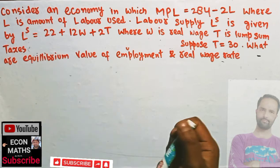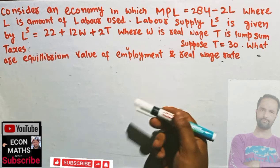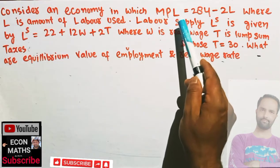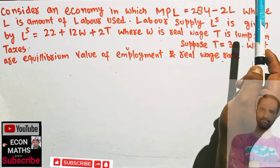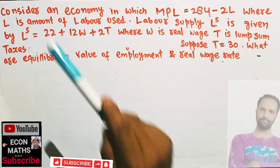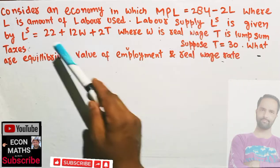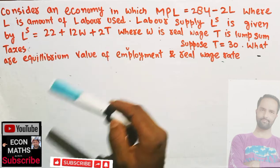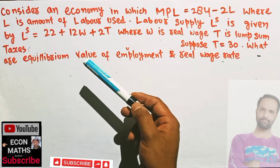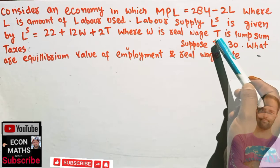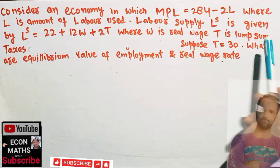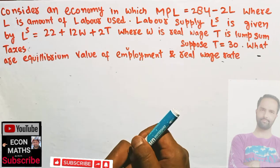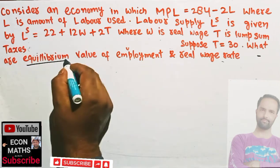In this video we will solve a problem on how to find the equilibrium real wage rate and employment. Consider an economy in which the marginal product of labor is given as 284 minus 2L, where L denotes the amount of labor used, and labor supply is given as 22 plus 12W plus 2T, where W is the real wage rate and T denotes the lump sum tax. We are told that T equals 30, and we need to find the equilibrium values of employment and real wage rate.